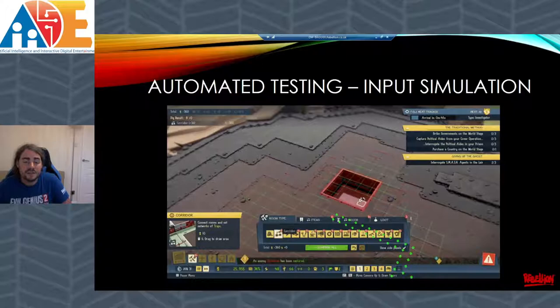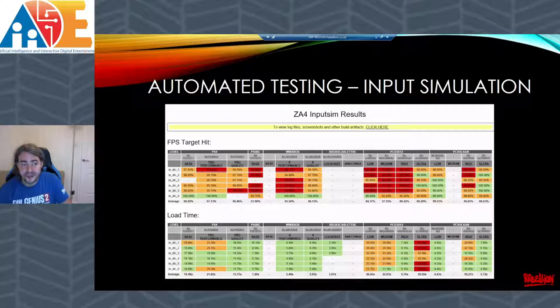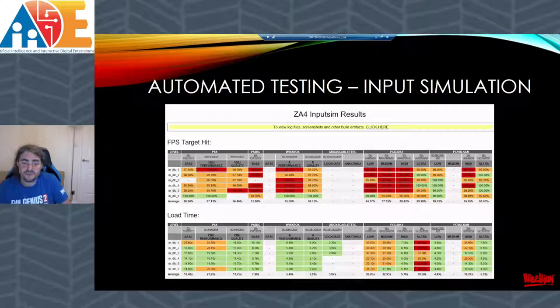We do this for all games, both in development and already released. Every team will get an email like this every morning because we run all the tests overnight, allowing about an hour per level, and we run this on a whole spectrum of different platforms. The email tells them how often they hit the FPS target, how long it takes to load a level, how much memory is being used, if the application is CPU bound or GPU bound, if dynamic scale resolution was used, and a whole myriad of other stats — so they can see every morning how well the project is doing and what potentially needs improving.